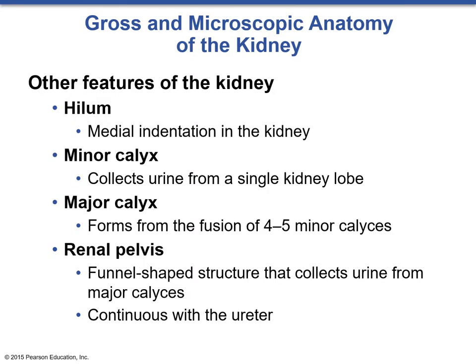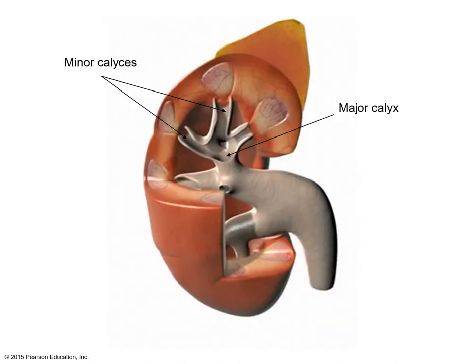The hilum is another structure on the side of the kidney — as we've discussed with the lungs and liver — it is simply an indentation in the organ where all vessels insert. In this case, it's where the ureter, renal artery, and renal vein all insert. From here we have the drainage structures: the minor calyx, major calyx, and renal pelvis. The minor calyx collects urine from a single kidney lobe at the renal papillae. A major calyx forms from the fusion of four to five minor calyces. The renal pelvis is the funnel-shaped structure that collects all urine from the major calyces and is continuous with the ureter.